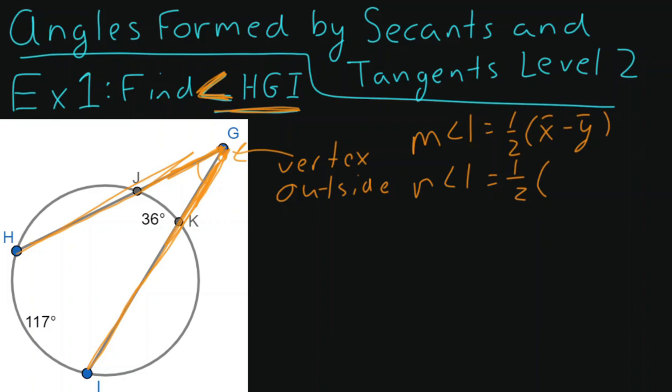Now let's go ahead and switch to a different color here. And when I'm asking myself, what is arc X? Well, I know that's going to have to be my larger arc. And so my larger arc is 117. And then, of course, that will be minus our smaller arc. And our smaller arc will always be arc Y, which in this case was 36.